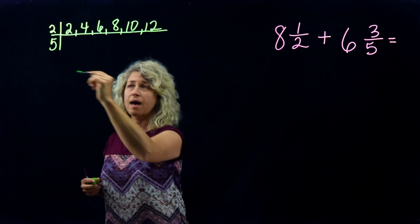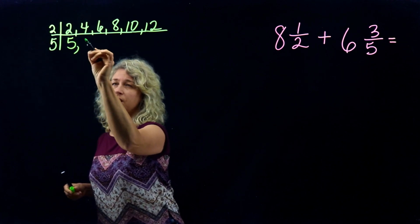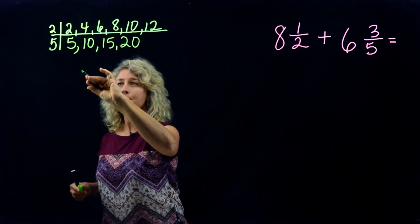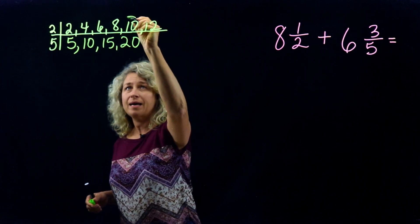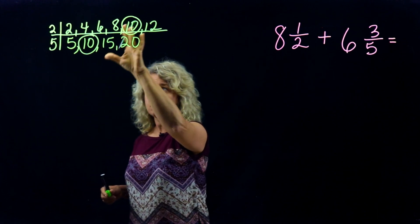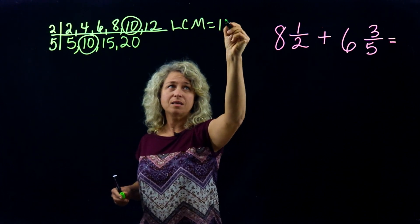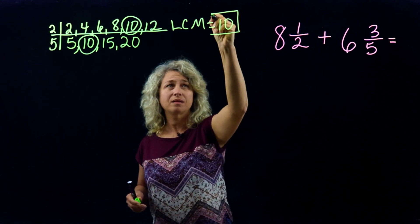5, 10, 15, 20. Now do you see the LCM? Do you see two that match up that are the least common multiples? 10, correct.